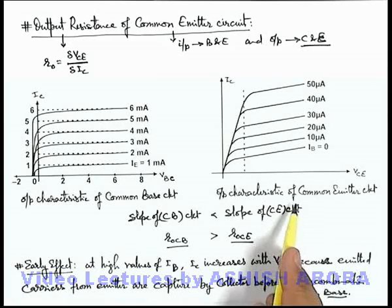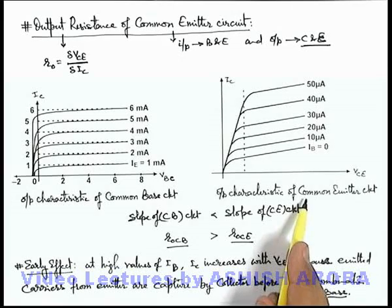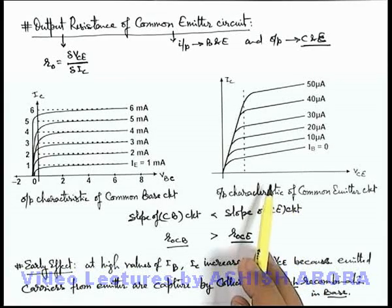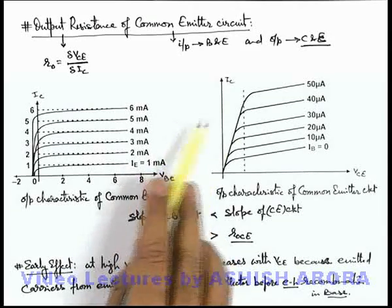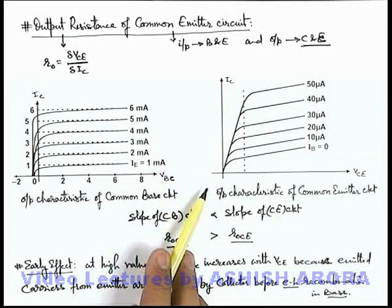Why, in case of output characteristic of common emitter circuit, the slope is relatively on higher side. As we increase the value of base current, the slope continuously increases.